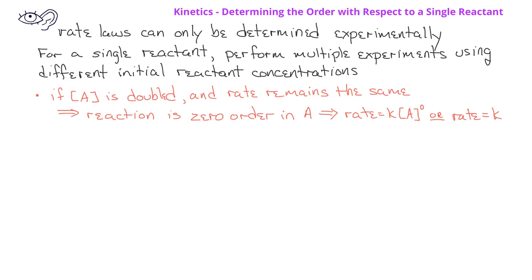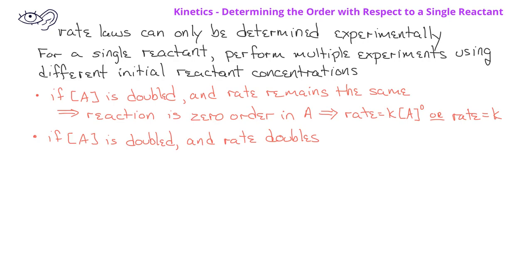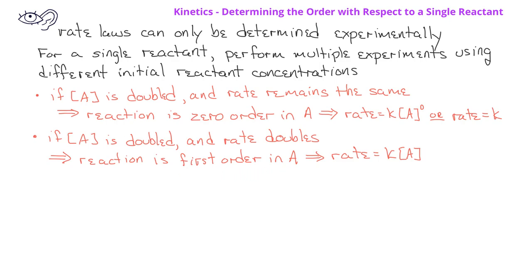So the rate law would be rate equals K times the concentration of A to the zero power, or more simply, the rate equals the rate constant. However, if between two experiments the concentration of A doubles and the rate also doubles, that means the reaction is first order with respect to the concentration of A. We would write the rate law as rate equals K times the concentration of A to the first power.